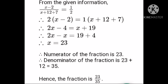Therefore, 2 into x minus 2 is equal to 1 into x plus 19. So 2x minus 4 is equal to x plus 19. Therefore, 2x minus x gives x is equal to 19 plus 4 is equal to 23. So x is equal to 23. Therefore, numerator of the fraction is 23 and denominator is 23 plus 12 is equal to 35. Hence, the fraction is 23 upon 35.